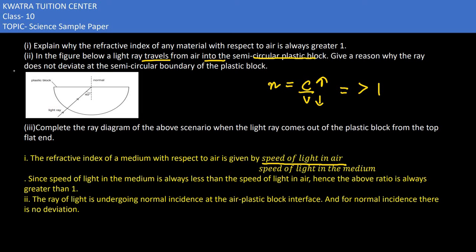The ray of light is undergoing normal incidence. If we can see it, what happens in normal incidence? There is no deviation.